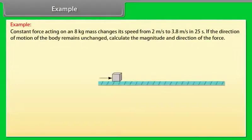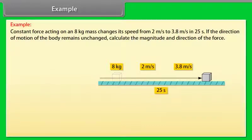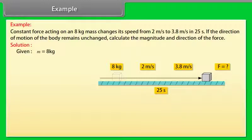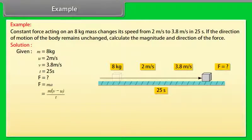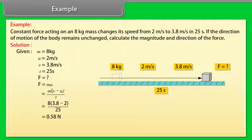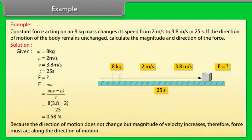Example: A constant force acting on an 8 kg mass changes its speed from 2 m/s to 3.8 m/s in 25 seconds. If the direction of motion remains unchanged, calculate the magnitude and direction of the force. Given: M = 8 kg, U = 2 m/s, V = 3.8 m/s, T = 25 s. F = MA = M(V − U)/T = 8 × (3.8 − 2) / 25 = 0.58 N. Since the direction of motion does not change but the magnitude of velocity increases, the force acts along the direction of motion.